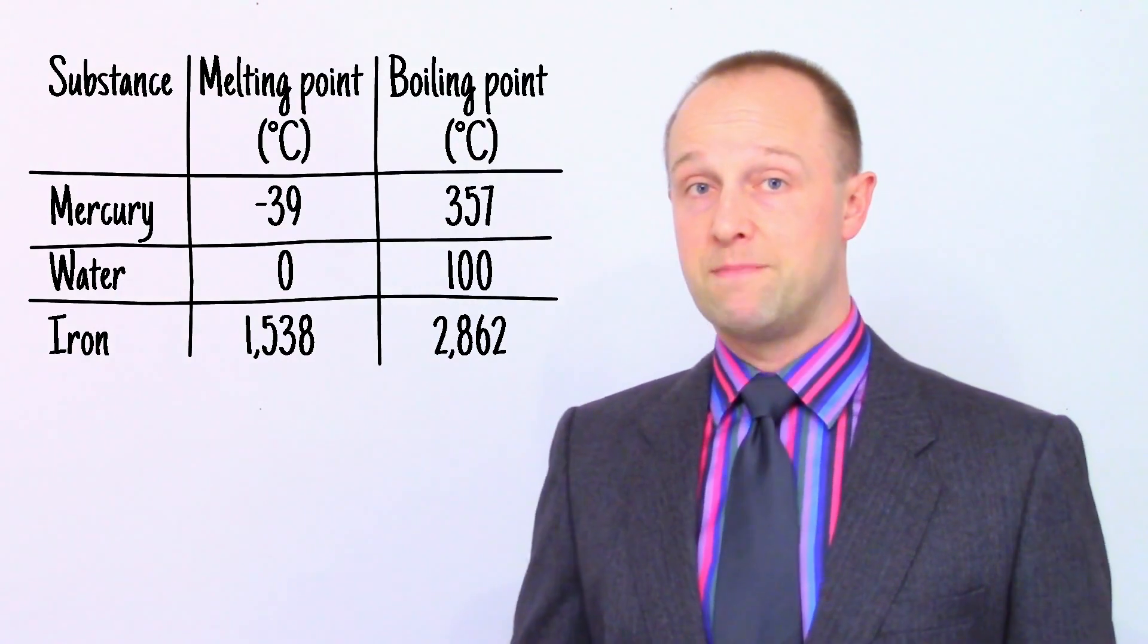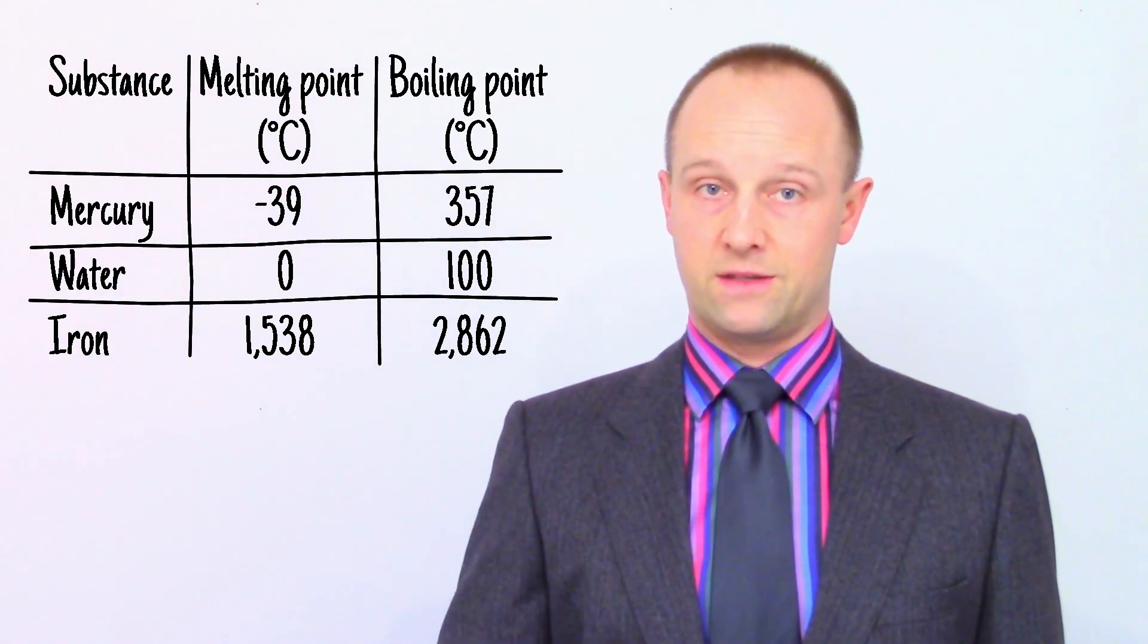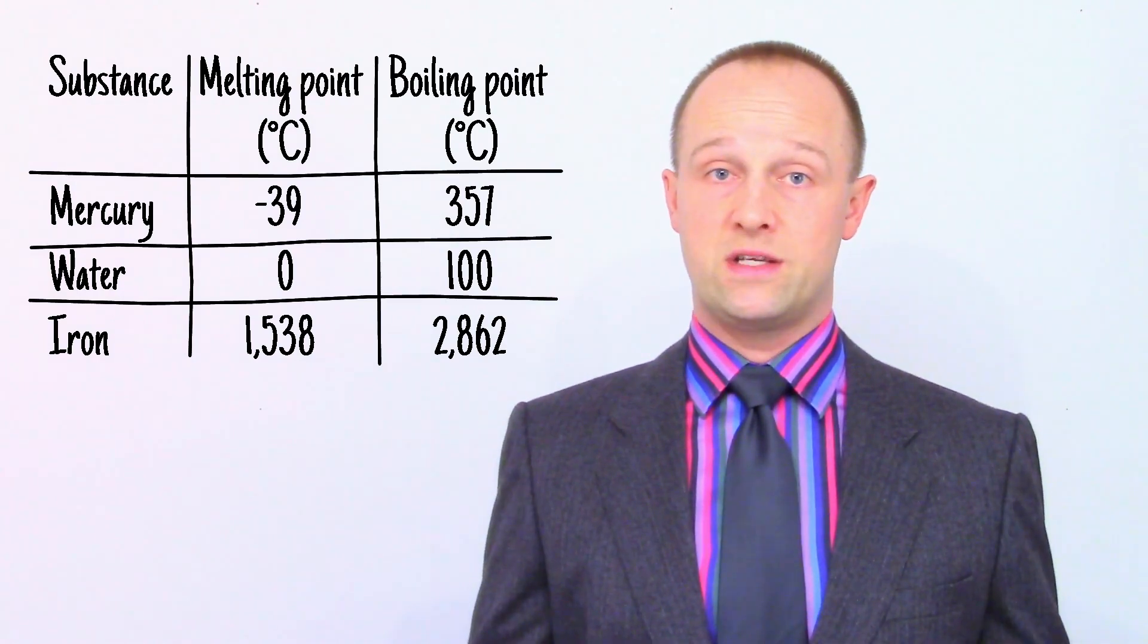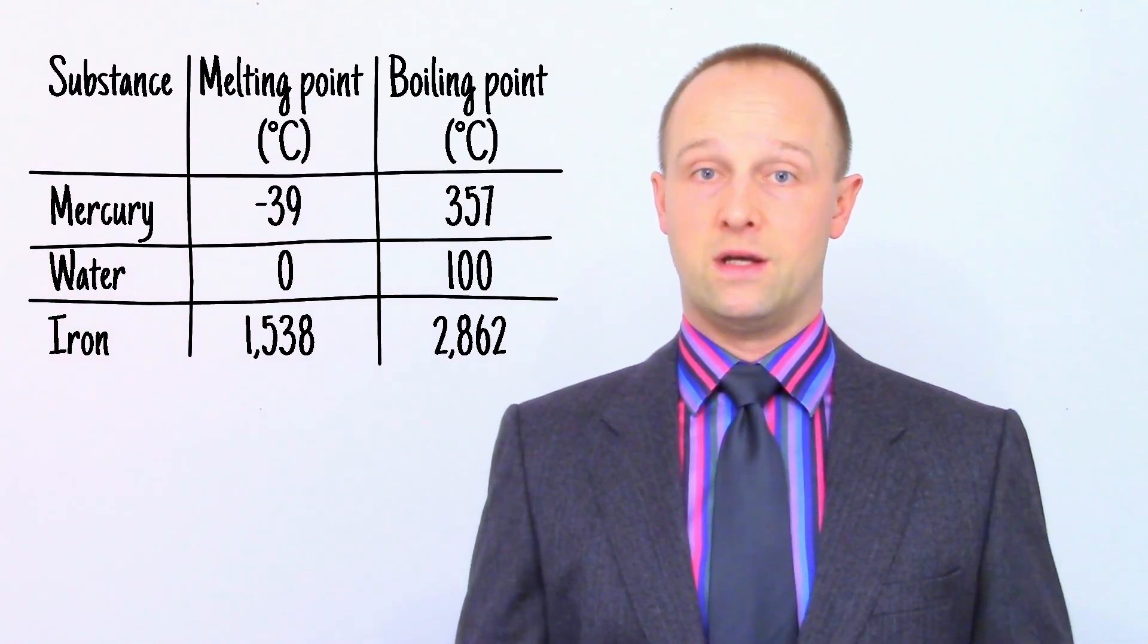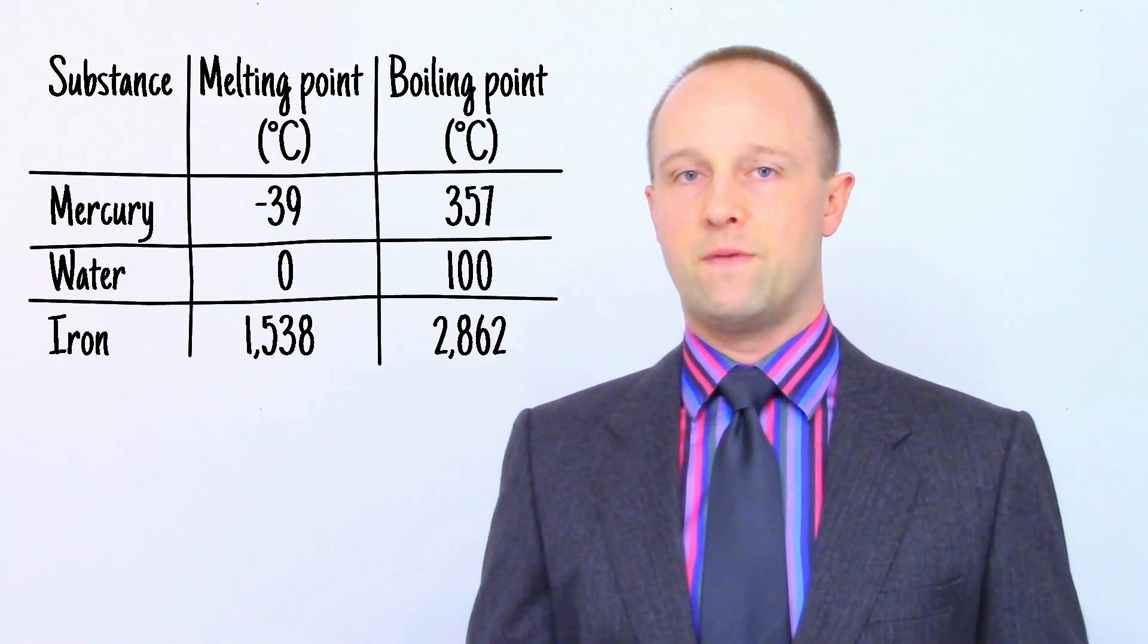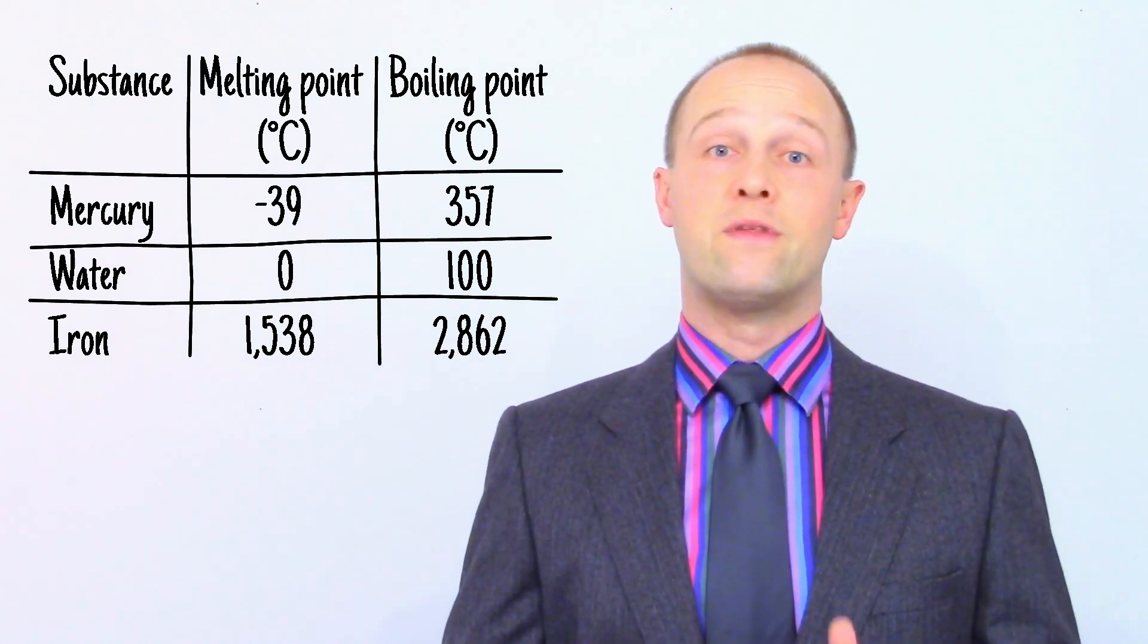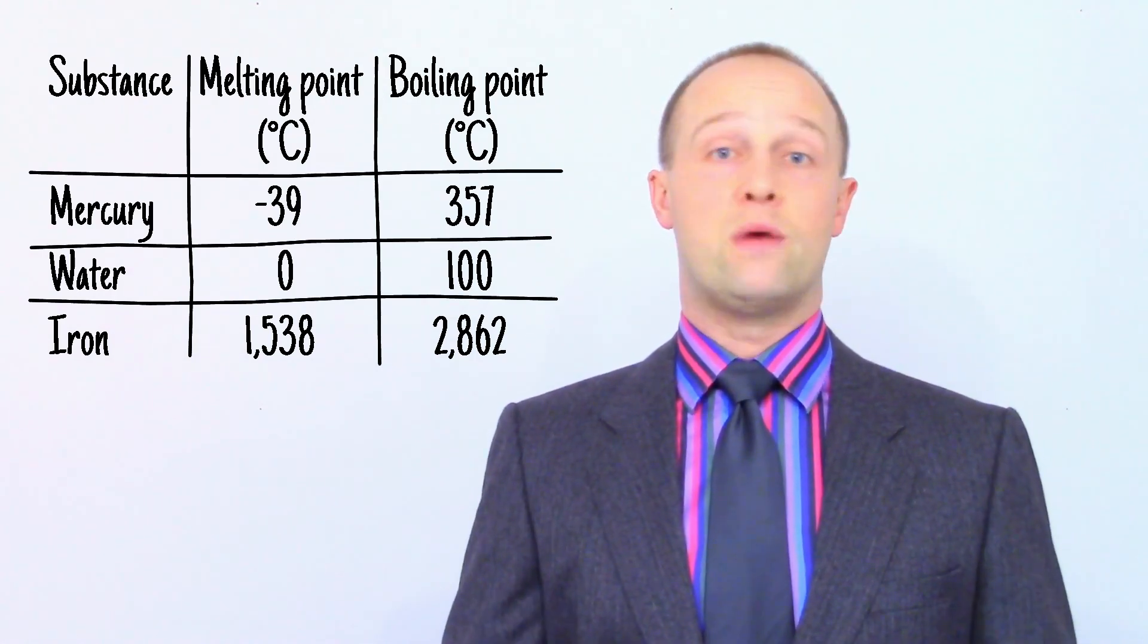Heating up to 200 degrees Celsius, we're now above the boiling point for water so the water becomes a gas. We're still below the boiling point for mercury so it's still a liquid. And we're still below the freezing point for iron so it remains a solid.